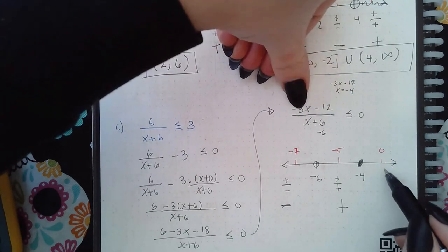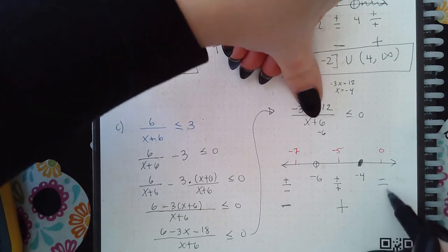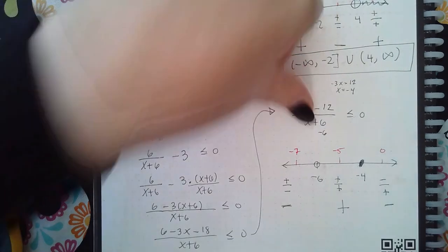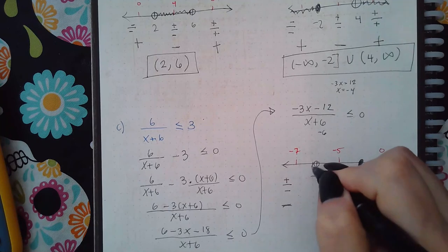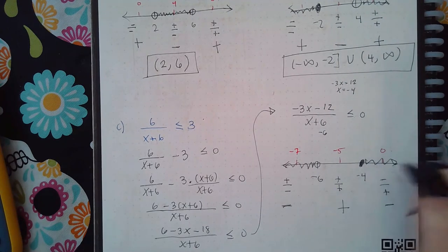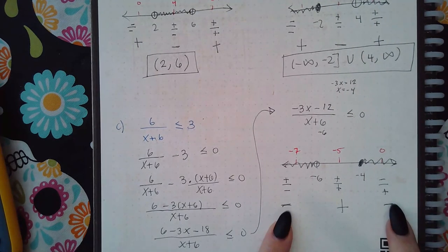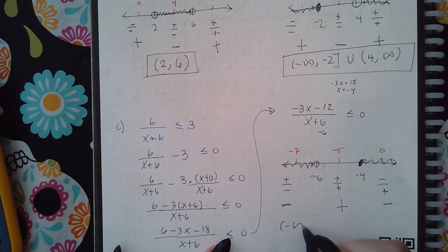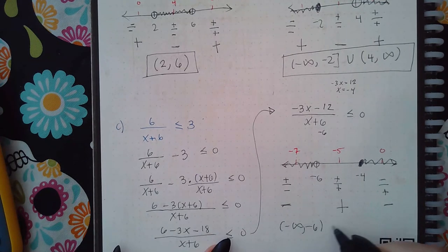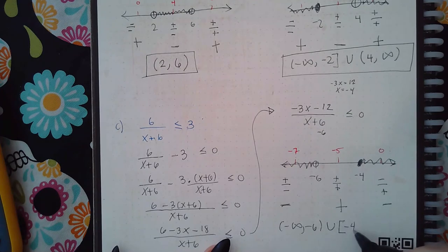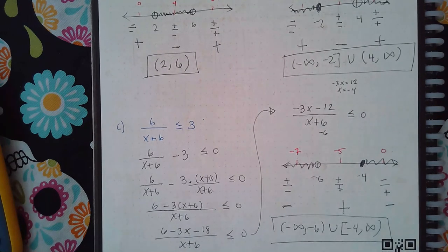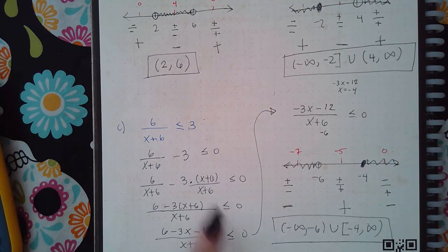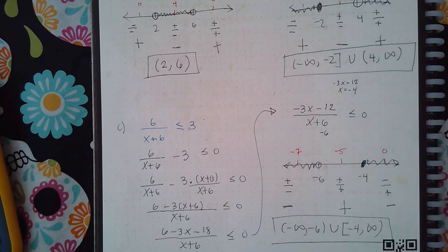At zero I get a negative over a positive, which is negative. I'm looking for where it's less than or equal to zero, so I include the negative regions. The final answer is negative infinity to negative six, union bracket negative four to positive infinity. This example required significant manipulation because the right-hand side was not zero — be aware of that as you work through this topic.